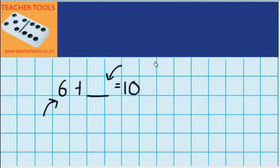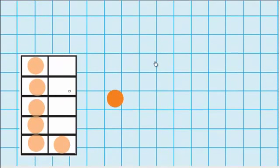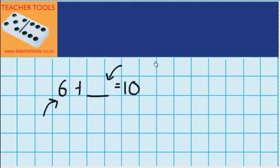Well, hopefully you'll imagine something like this. There's the 10s frame. It's got 6 counters on it. So you can see that it would need 4 more counters to make that 10s frame full. So 6 plus 4 equals 10.